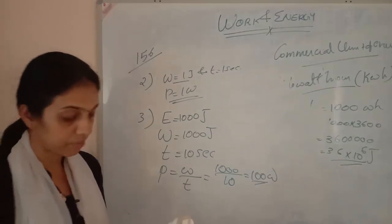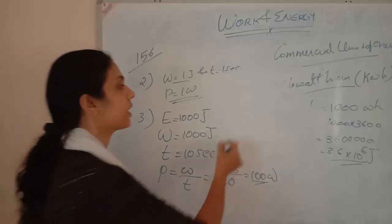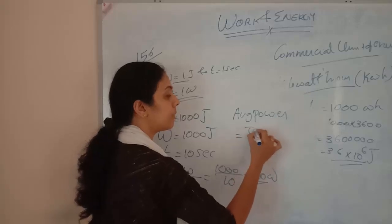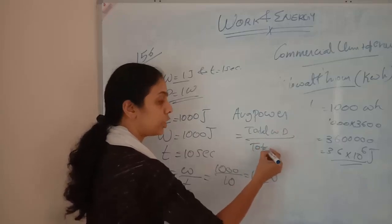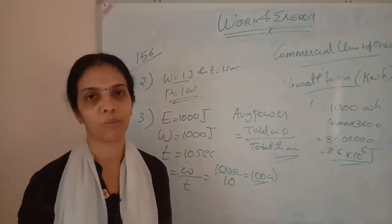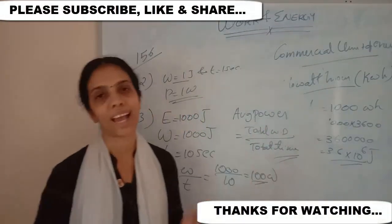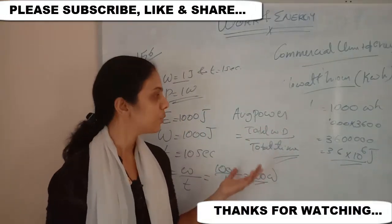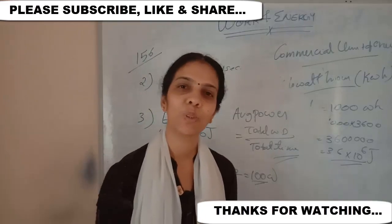Define average power: average power is the total work done divided by total time — that ratio is called average power. These are the main topics in work and energy. In the next video we will continue with the exercise questions. I hope all of you understood. If you like the channel please don't forget to subscribe. Thank you for watching. Bye.